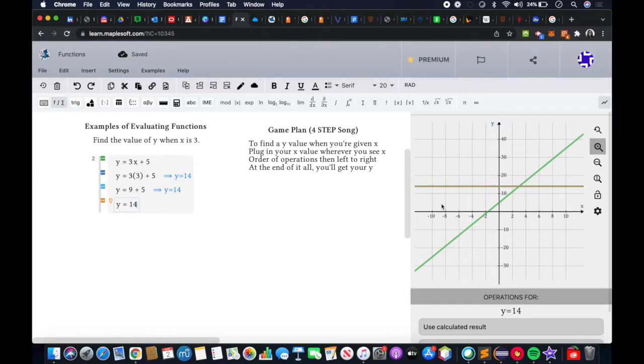At the end of it all, you'll get your y. So right here, we see that in the line y equals 14, which it graphed right here with this brownish line. It intersects with our graph at 3, 14, because 3 is between 2 and 4. Therefore, we got the correct answer through plugging in the x value into a function.